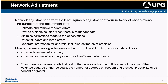The purpose of the network adjustment is to estimate and remove random errors, provide a single solution with all the data instead of those little loops, minimize the corrections to the observations, detect blunders by looking at how your ratios and standardized residuals fall out, and generate statistical information that you can store as a reference for later.